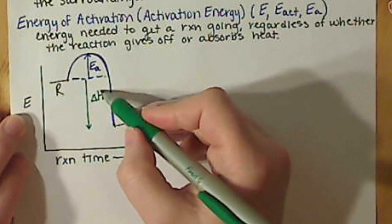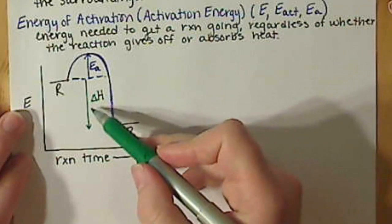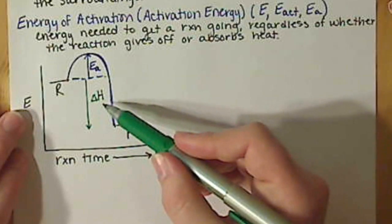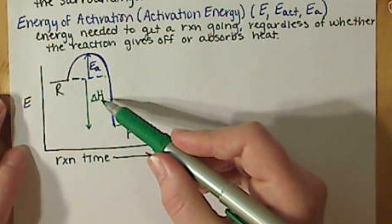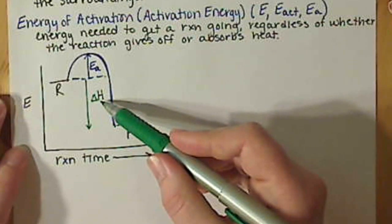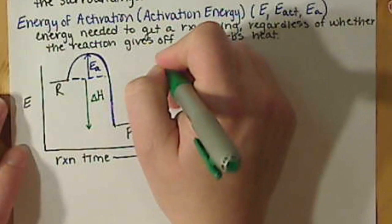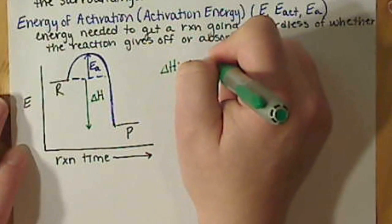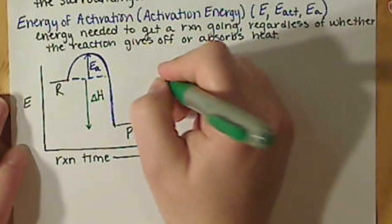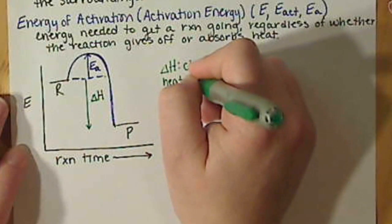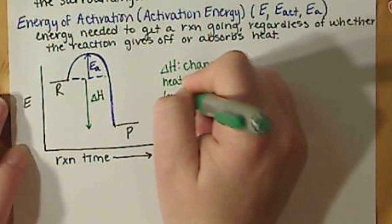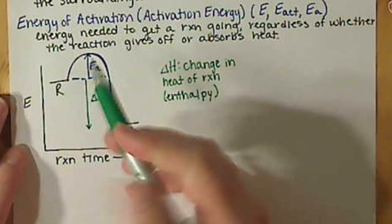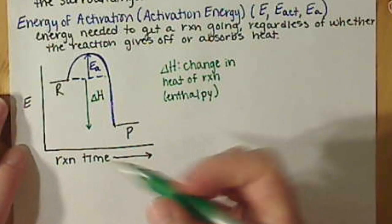This energy that's given off we call delta H, which we've seen before. This is our change in enthalpy, or our change in heat. We saw this first at the end of chapter 2 when we talked about enthalpy of fusion and enthalpy of vaporization, or heat of fusion and heat of vaporization. Basically, what we're looking at for this delta H now is just very generically — this is the change in heat of the reaction, and we call that enthalpy.